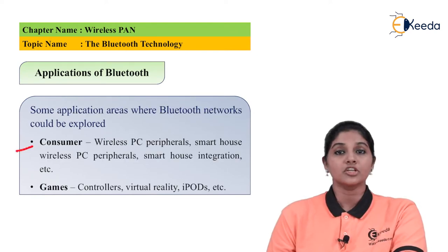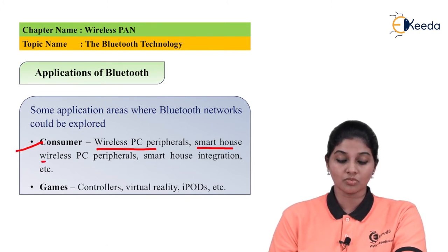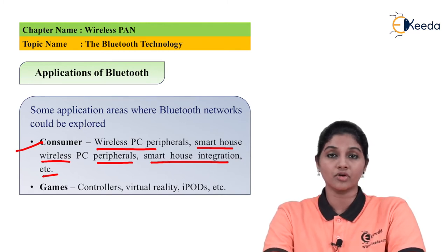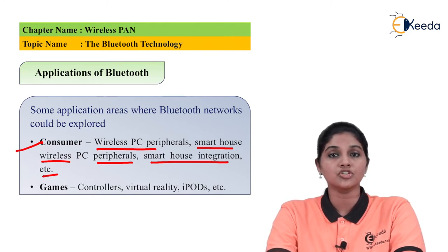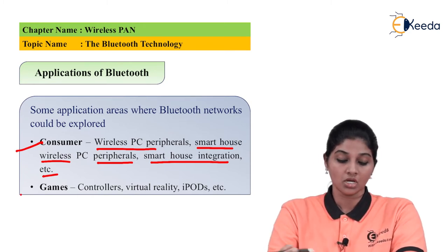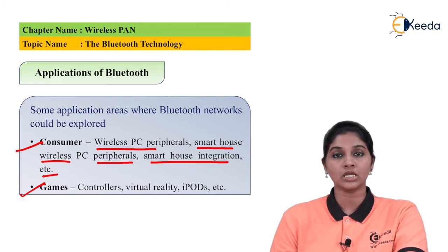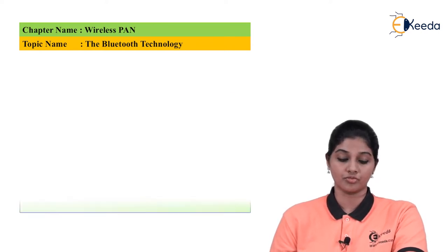The first application of Bluetooth is consumer electronics — wireless PC peripherals, smart home integration, and similar uses. For example, a Bluetooth-enabled AC where you can use Bluetooth technology to set the temperature. The second application is gaming — various game controllers, virtual reality devices, and iPods all use Bluetooth for communication.